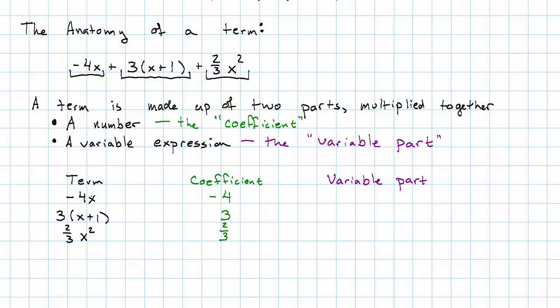The variable part of the term is creatively called the variable part. So the big vocabulary word here is coefficient. In the negative 4x term, the variable part is just the x. In the 3x plus 1 term, the variable part is x plus 1. And in the 2 thirds x squared term, the variable part is x squared. Notice, again, the term is just made up of the coefficient and the variable part multiplied together.